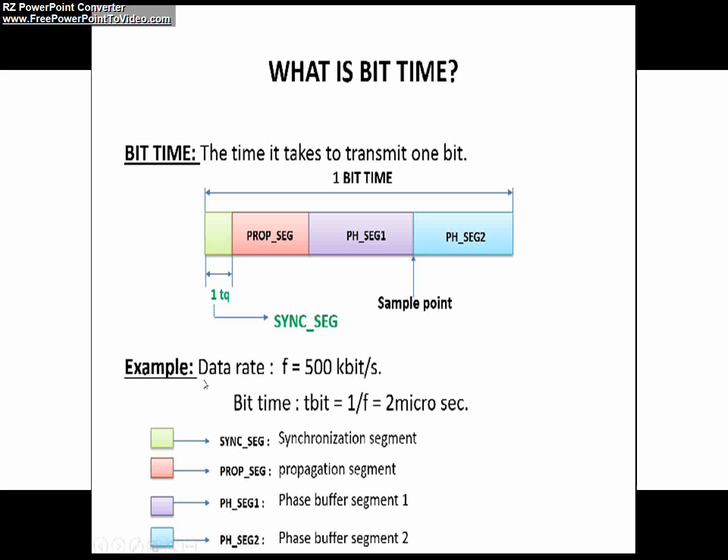Here you can see the data rate, indicated by f. For example, let's say the data rate is 500 kbps—that means 500 kilobits per second. The CAN is operating at 500 kbps.